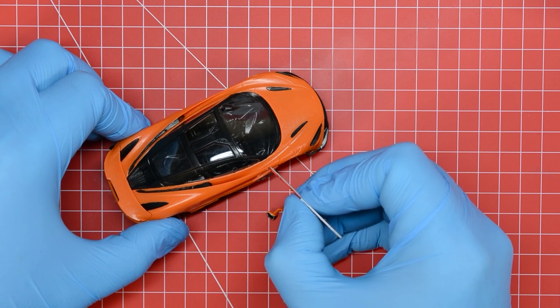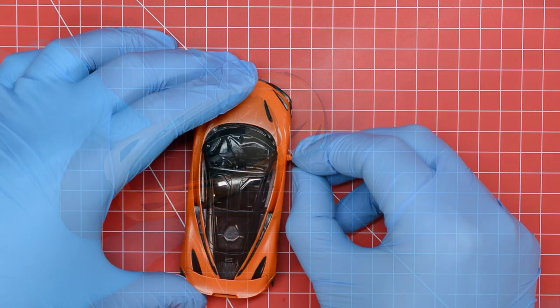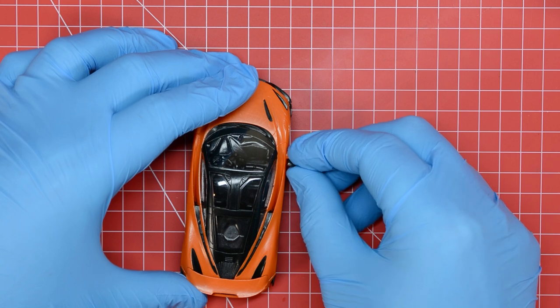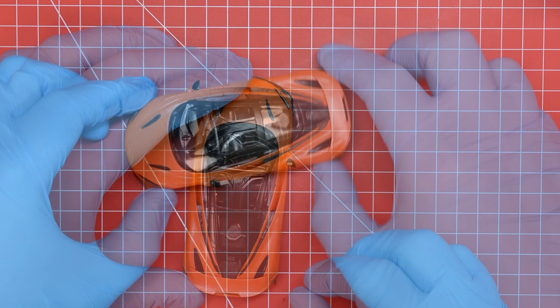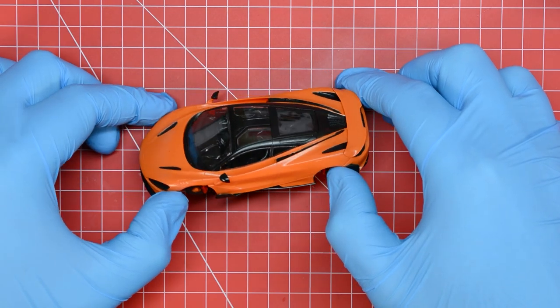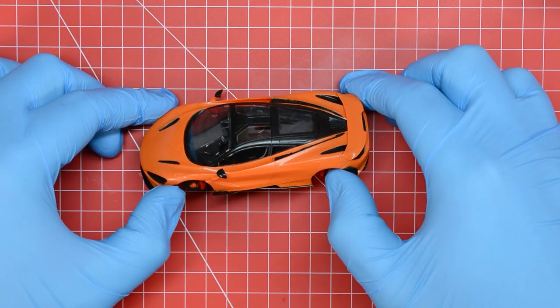We've cut the applicator down so that we can carefully position the glue inside the recesses without getting any glue on our carefully painted model. Once the mirrors are in position that's the entire construction completed on the upper portion of the model and it's time to move on to the wheels and tyres.